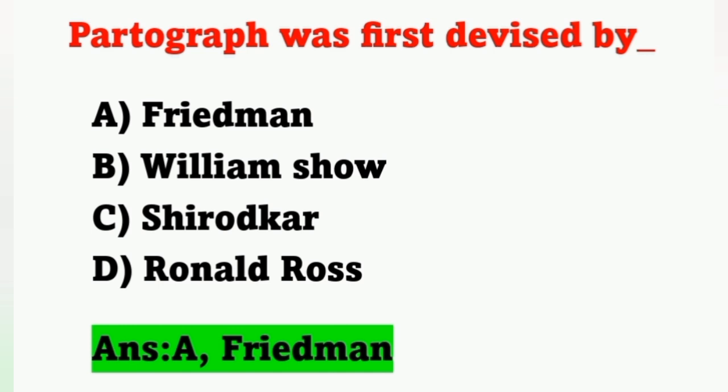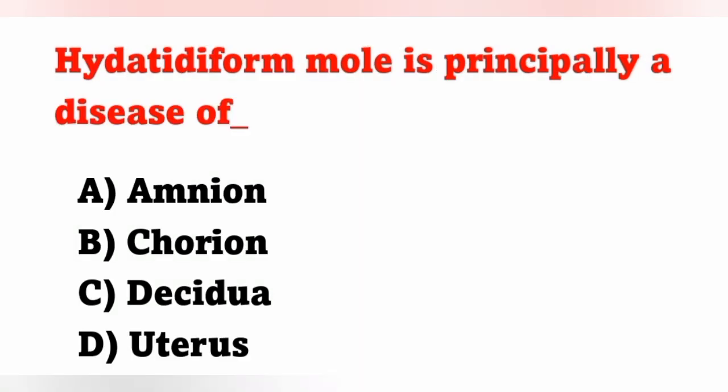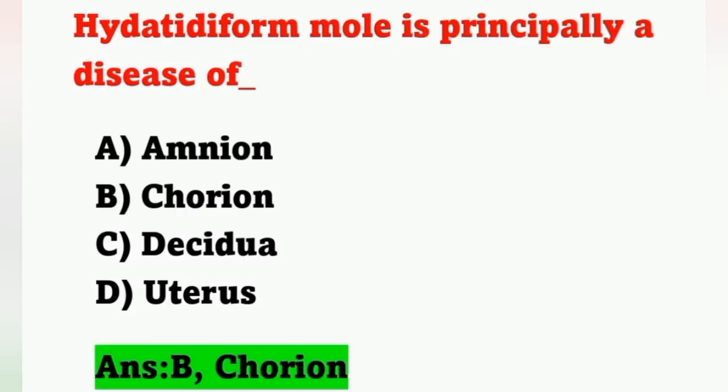The next question: hydatidiform mole is principally a disease of — options: A: amnion, B: chorion. Hydatidiform mole, also known as vesicular mole, is an abnormal condition of the placenta mainly related to a disease of the chorion — option B is the correct answer.